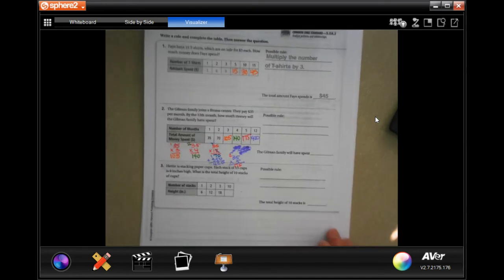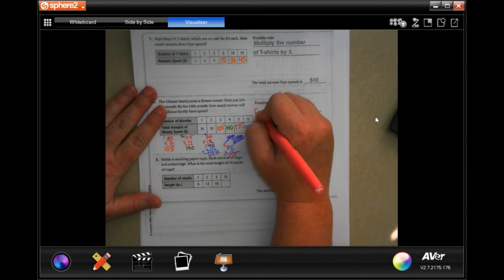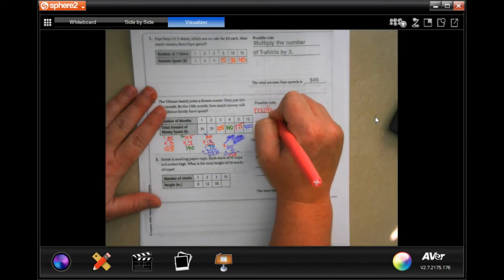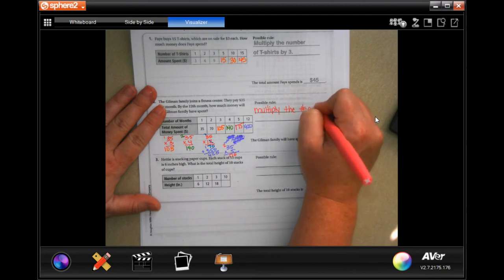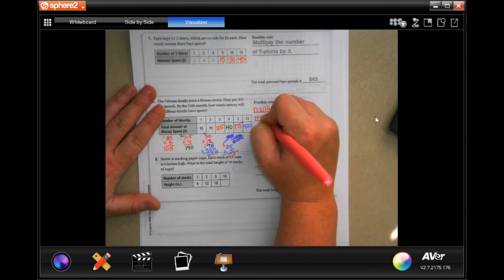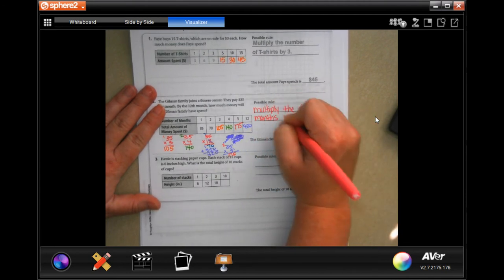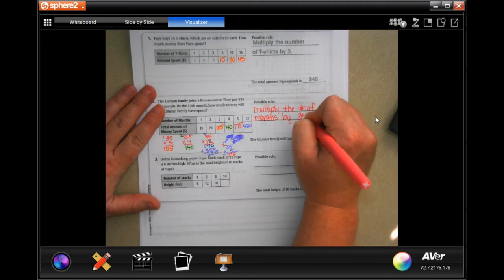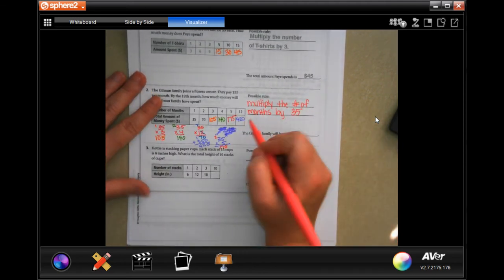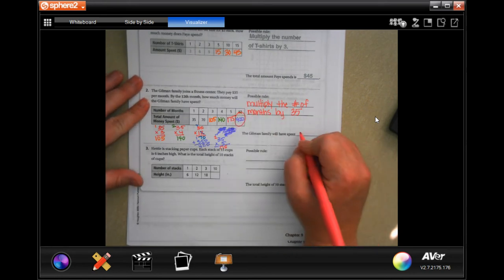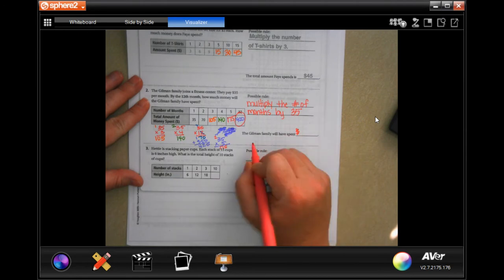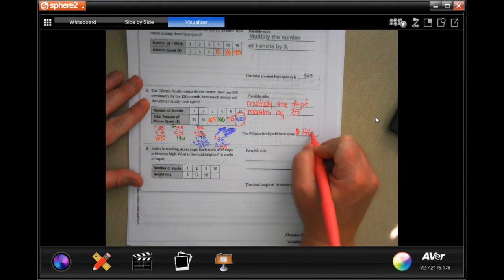Okay, 35 times 5. 5 times 5 is 25, carry that 2. 5 times 3 is 15 plus 2 is 17, so 175. Our rule would be to multiply the number of months by 35. It's asking for that last number there, so it's talking about money: 420 dollars.